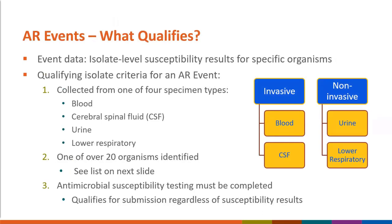When we talk about a single AR event, we are talking about individual isolate-level susceptibility data for a reportable organism or pathogen. To qualify as an AR event, the isolate must be collected from one of the four specimen types listed here. These specimen types include both invasive — blood or CSF — and non-invasive: urine and lower respiratory specimens. Isolates identified must be a pathogen listed in our reportable organism list, and some antimicrobial susceptibility testing must be completed. An isolate qualifies as an event regardless of the results of this testing.